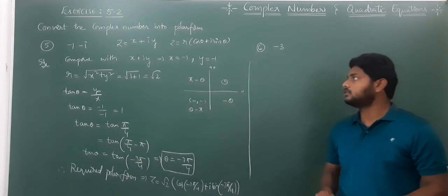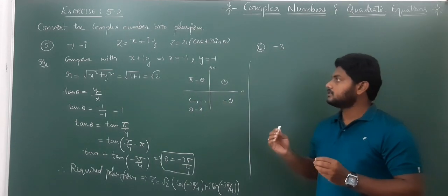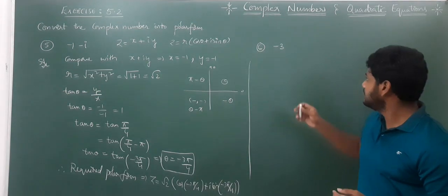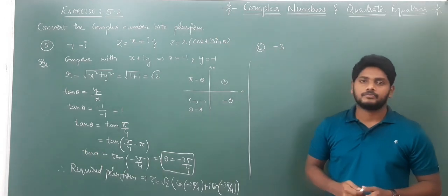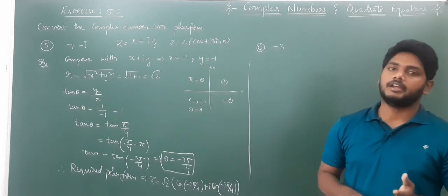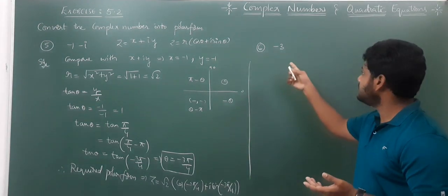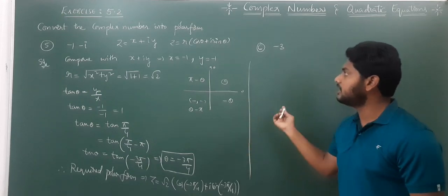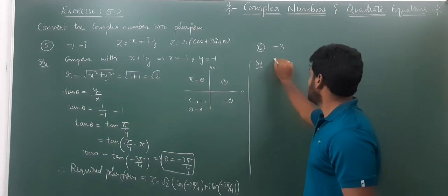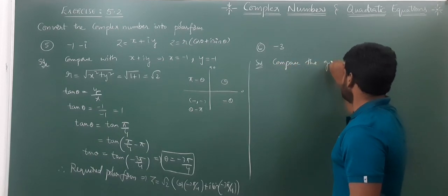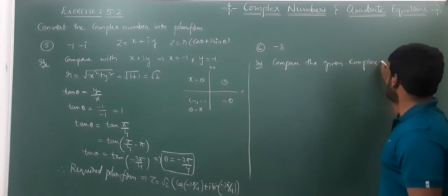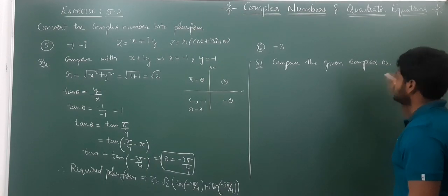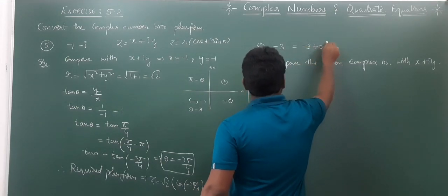Next is question 6 from Exercise 5.2: convert -3 into polar form. Is -3 a complex number? Minus 3 is an integer, a negative integer, a real number, and also a complex number. We can write it as -3 + 0·i, comparing with X + iY. So X = -3 and Y = 0. Any real number can be written in the form X + iY, where the imaginary part is 0.